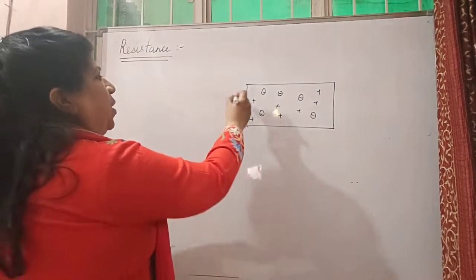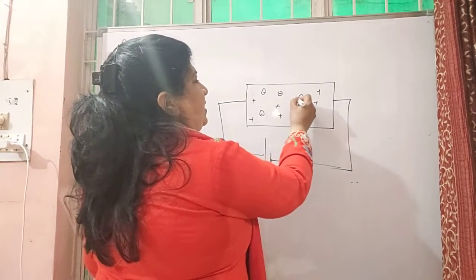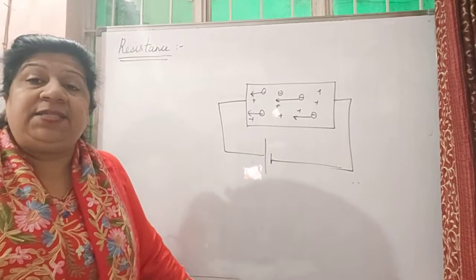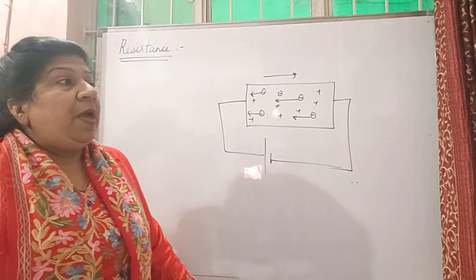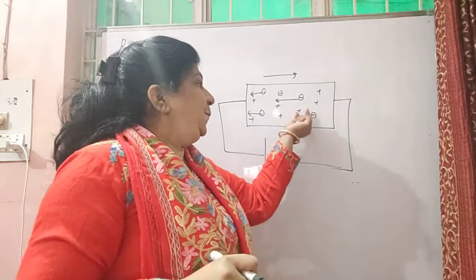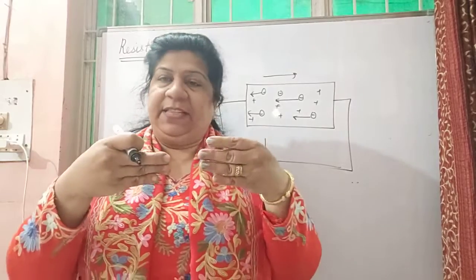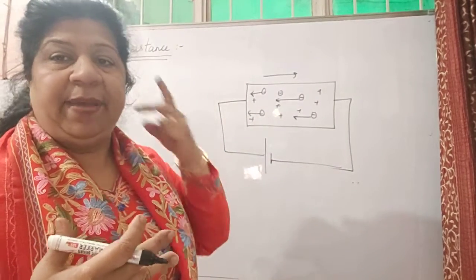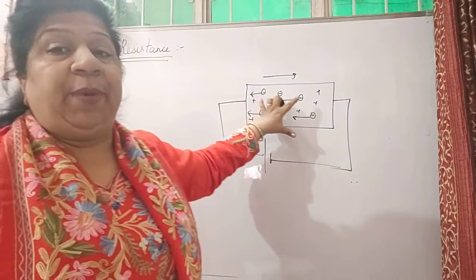What happens when you put a potential across this conductor? These electrons start moving in a specific direction towards the positive charge. When the electrons are moving, obviously the current starts moving in the other direction. But as these electrons keep moving, they start striking and colliding with each other and colliding with the positive ions also. So there is an obstruction in the flow of the current.